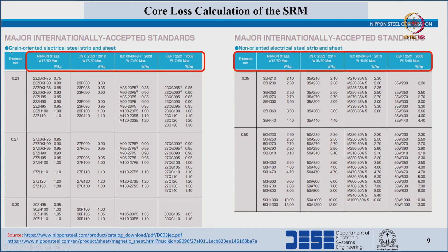For grain-oriented and non-grain-oriented electric steel, the loss per kg can be seen in these two charts, and the references are also provided.